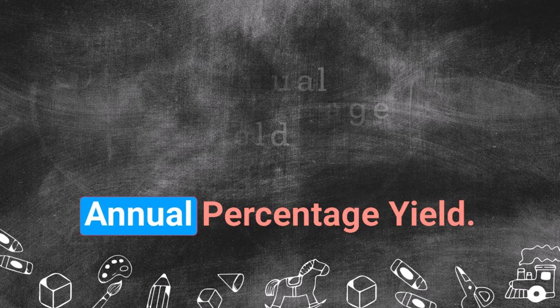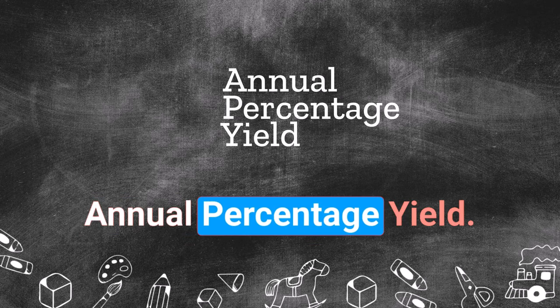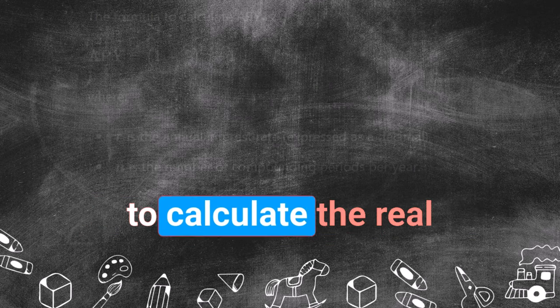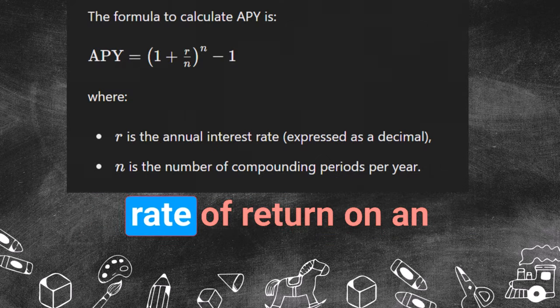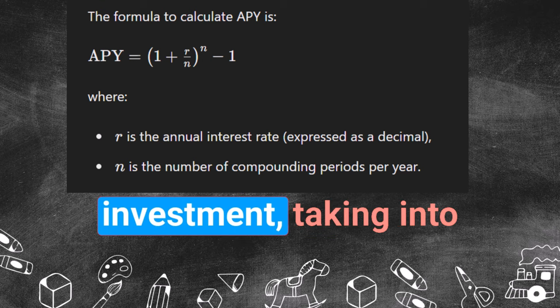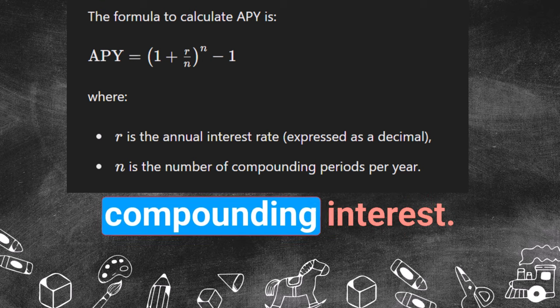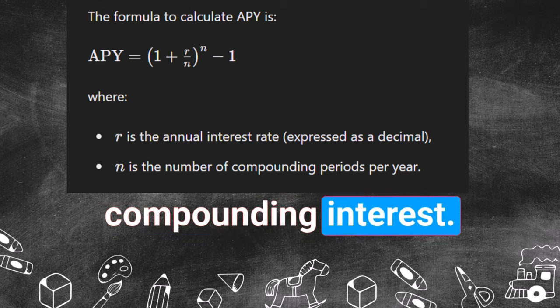APY stands for Annual Percentage Yield. It is a metric used to calculate a real rate of return on an investment, taking into account the effect of compounding interest.